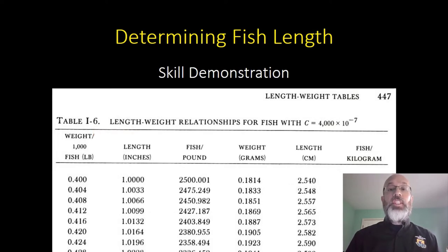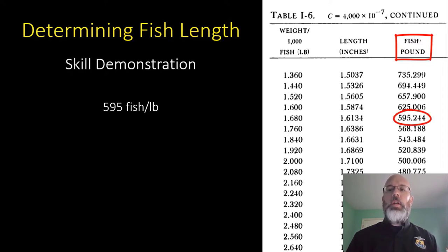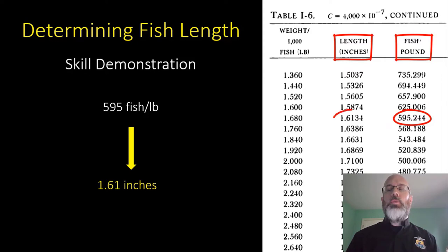Here is the table we're going to use from Fish Hatchery Management. If you go to the back, you'll notice the condition factors are listed at the top of the page. Make sure you have the one that says C equal to 4,000 times 10 to the minus 7. In our case, we had 595 fish per pound, so in the third column where it says fish per pound, you follow that down until you find something close to 595, then come across the table to the left to find the length in inches — in this case, 1.61 inches.